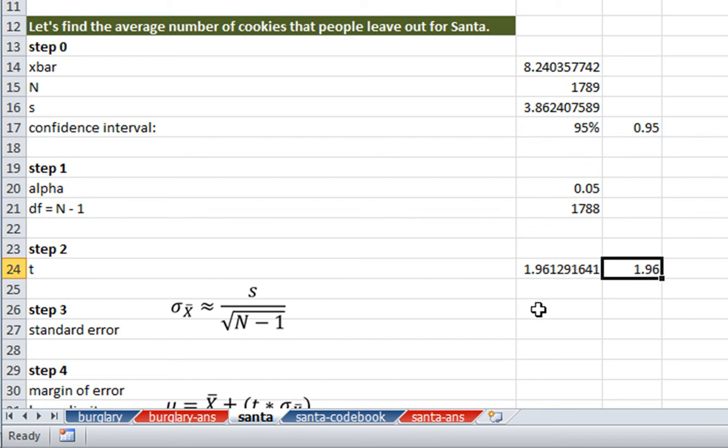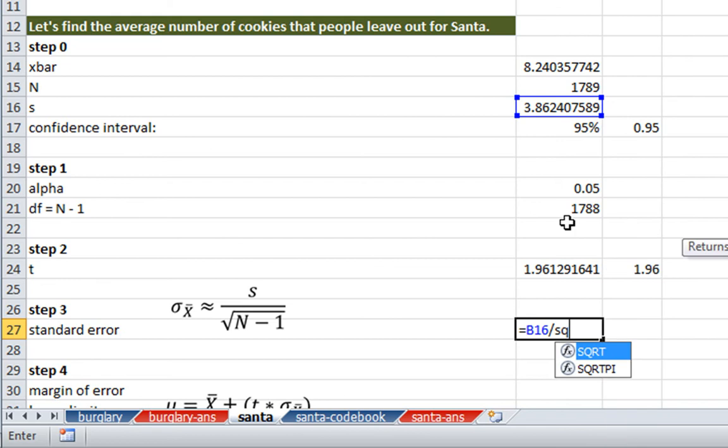Moving down to step three, calculating the standard error. I'm showing you the formula right here that we want to use to calculate the standard error. We can type in equals s, which is this number right here, 3.86. And we want to divide by the square root of n minus 1. n minus 1, we can just use our degrees of freedom, which is right there, because the degrees of freedom is n minus 1. So we have our standard error.